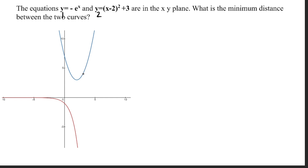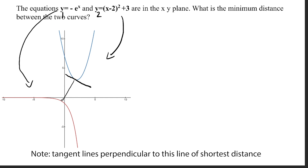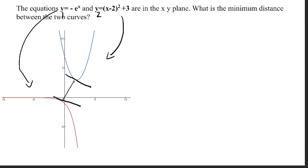This also means that the derivatives at the two points will be equal. Here we have the two curves — this equation corresponds to this curve and this one corresponds to this one here. We can visually see that the line of shortest distance will occur somewhere around here, where the tangent lines will be parallel, just like so.